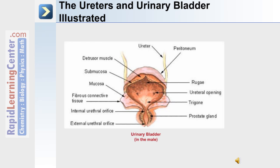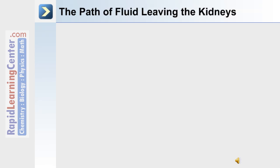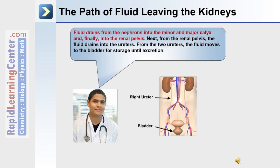There are also two ureteral openings for where the ureters from the kidneys deliver urine into the bladder, an internal and external urethral orifice. In this image depicting the urinary bladder in the male, the prostate gland is visible. Filtered fluid leaving the kidneys is drained from the nephrons into the minor and then major calyx, which finally drains into the renal pelvis, and from there into the ureters.